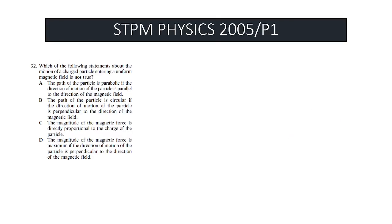Question 32: Which of the following statements about the motion of a charged particle entering a uniform magnetic field is NOT true? Statement A: The path of the particle is parabolic if the direction of motion of the particle is parallel to the direction of the magnetic field. Statement A is not true — the key word here is 'parallel.'